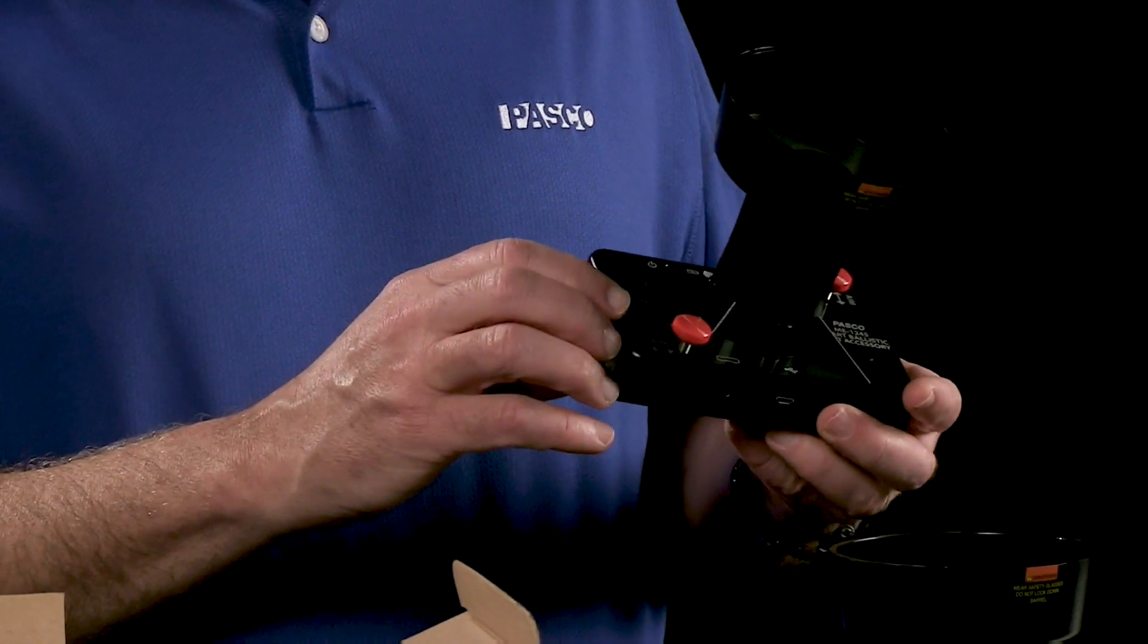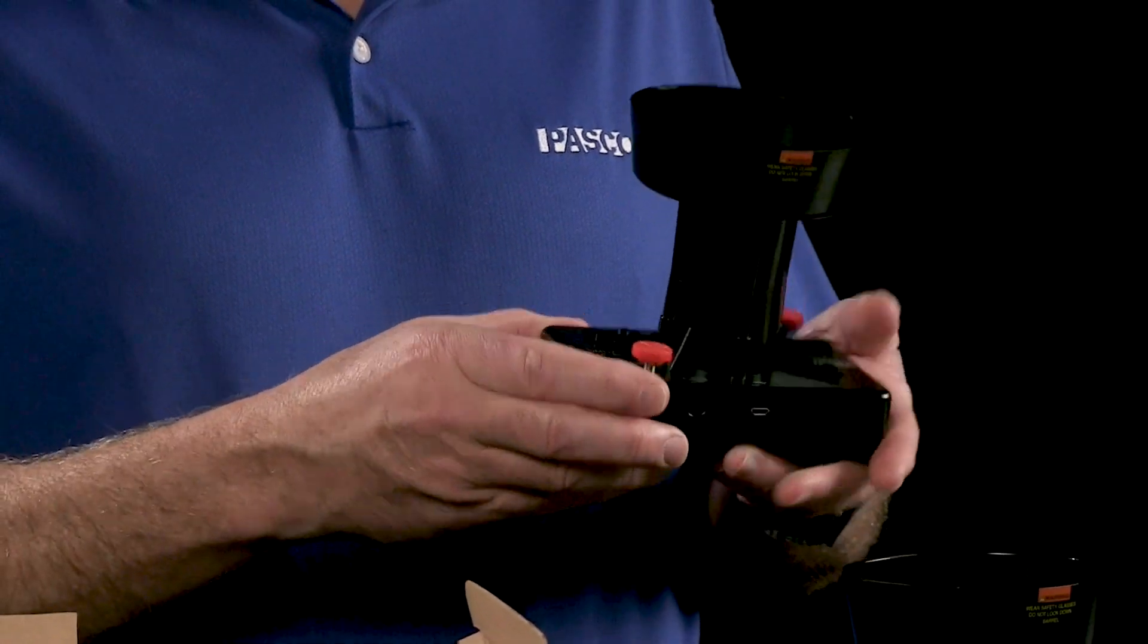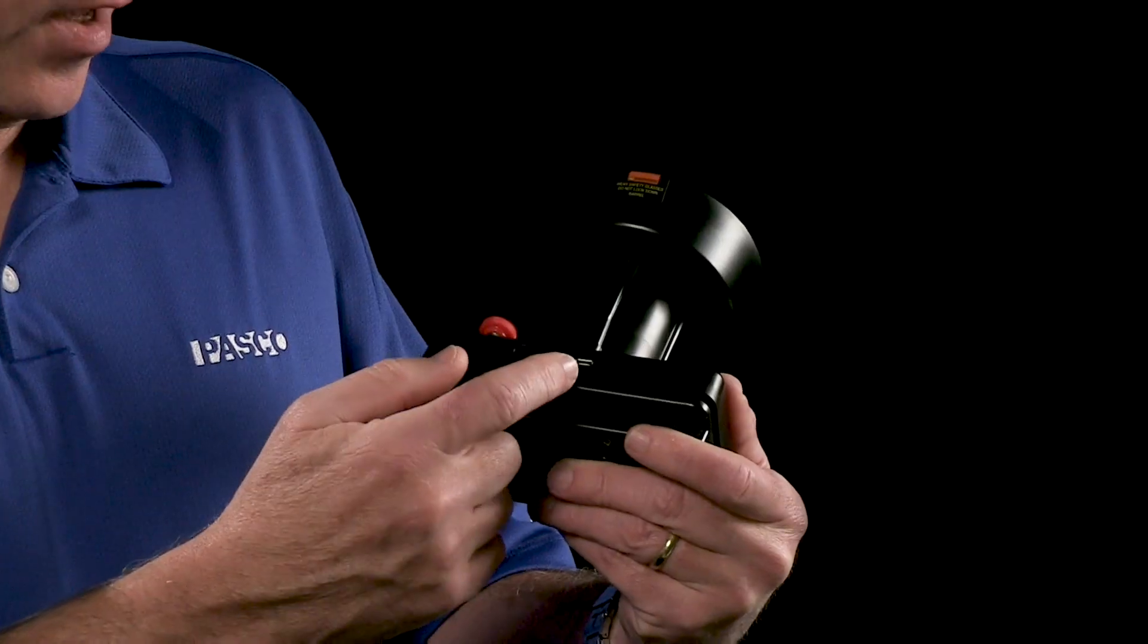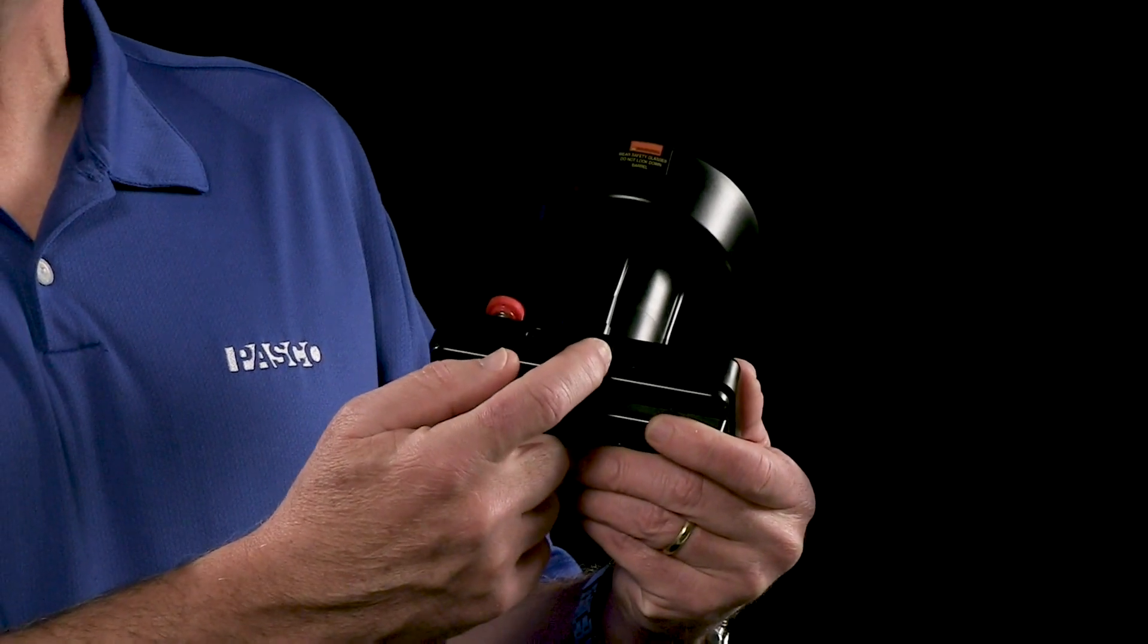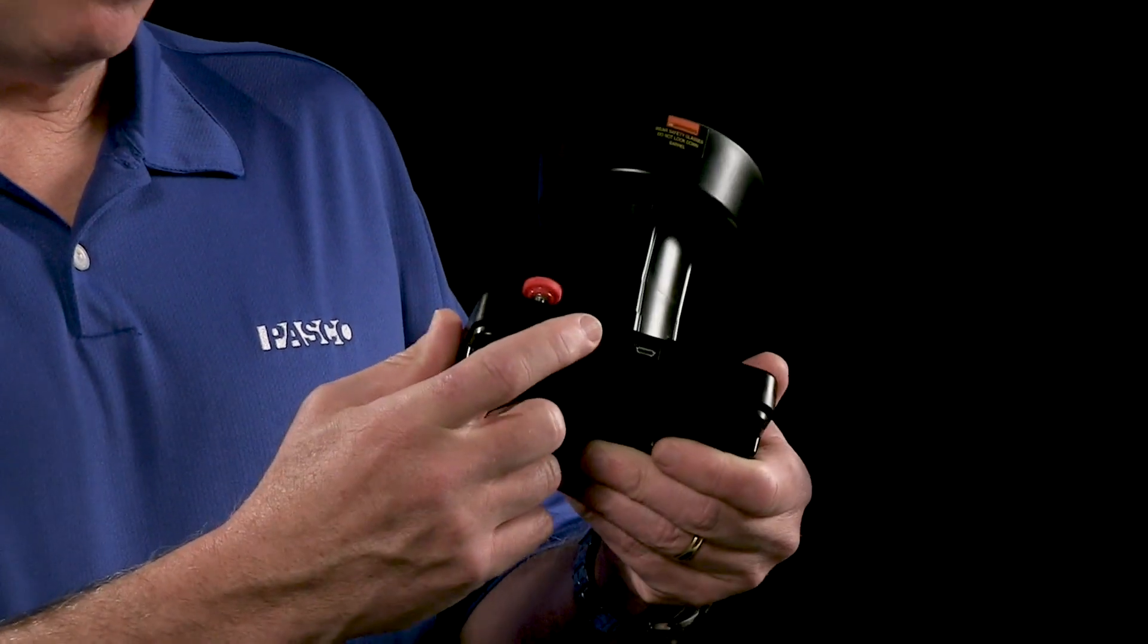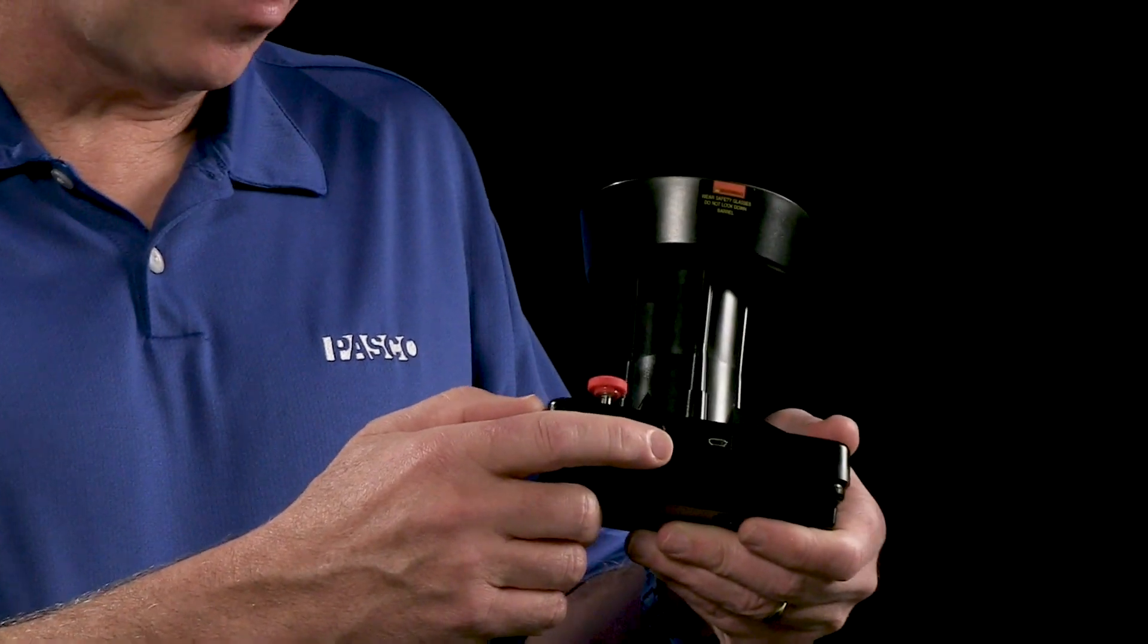And then there's a timer release button for using it with regular carts. On the side of the smart ballistic cart accessory is a USB charging port. It has a built-in lithium ion battery, and then also the attachment for the accessory cable if you're going to hook it up to a smart cart.